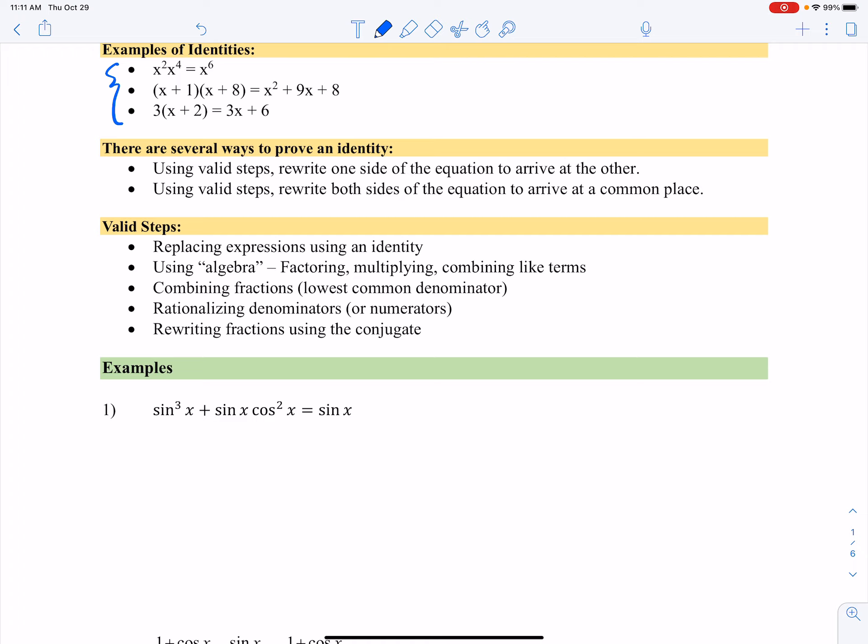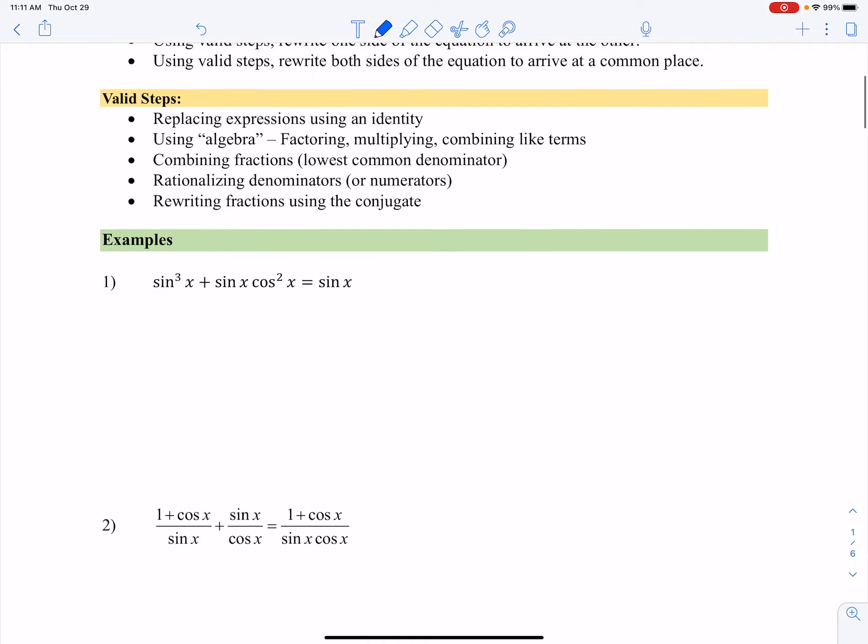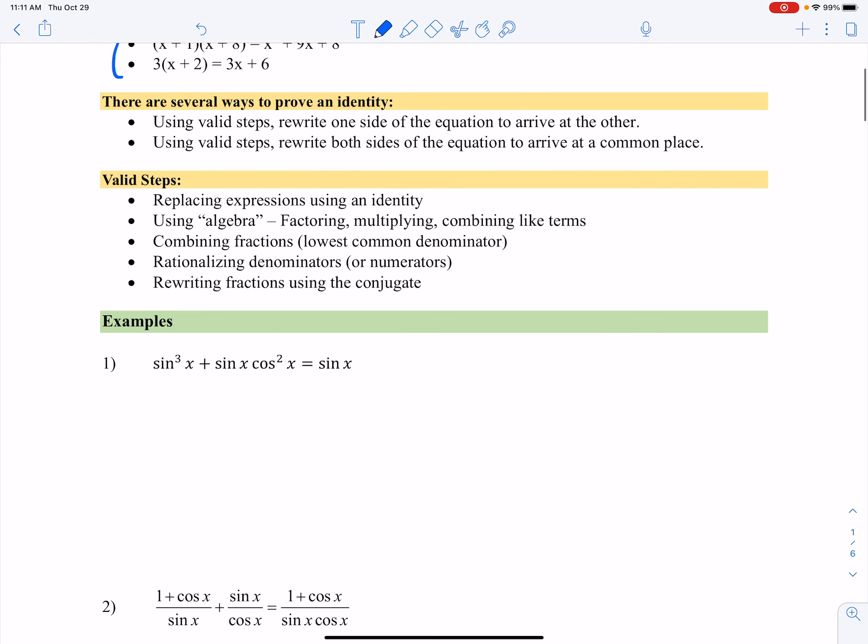With that said, let's look at a couple examples. Number one here, notice that we have this complicated left side equal to the right side. I'm going to be working with the left hand side. What I notice is that if I look at the terms, I can factor out a sine of x.